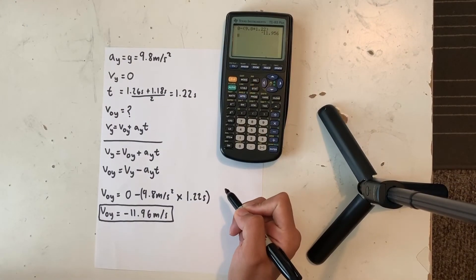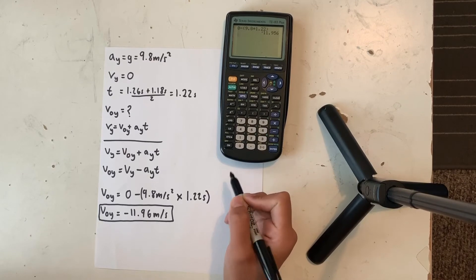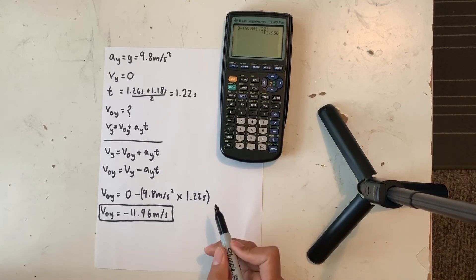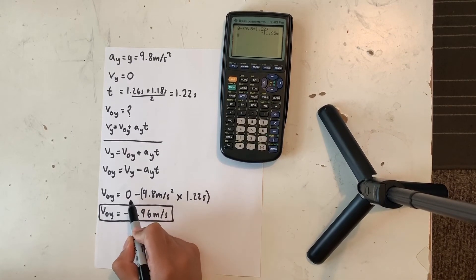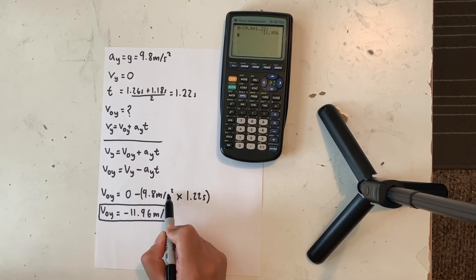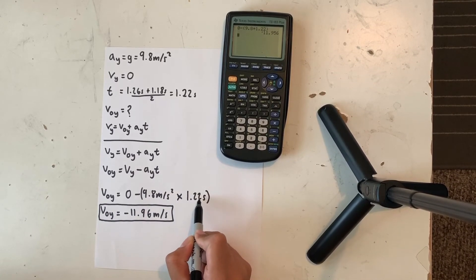Now that I have the correct equation I'm going to use, I'm going to isolate my unknown variables from my known variables. This leads me to have my initial velocity which is equal to 0 minus my 9.8 meters per second squared acceleration multiplied by my 1.22 seconds.